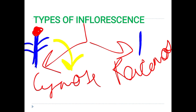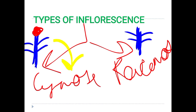If the flowers are present on the lateral branches — present here, present here, present here — but the main axis does not contain a flower at the top, that is the main difference.